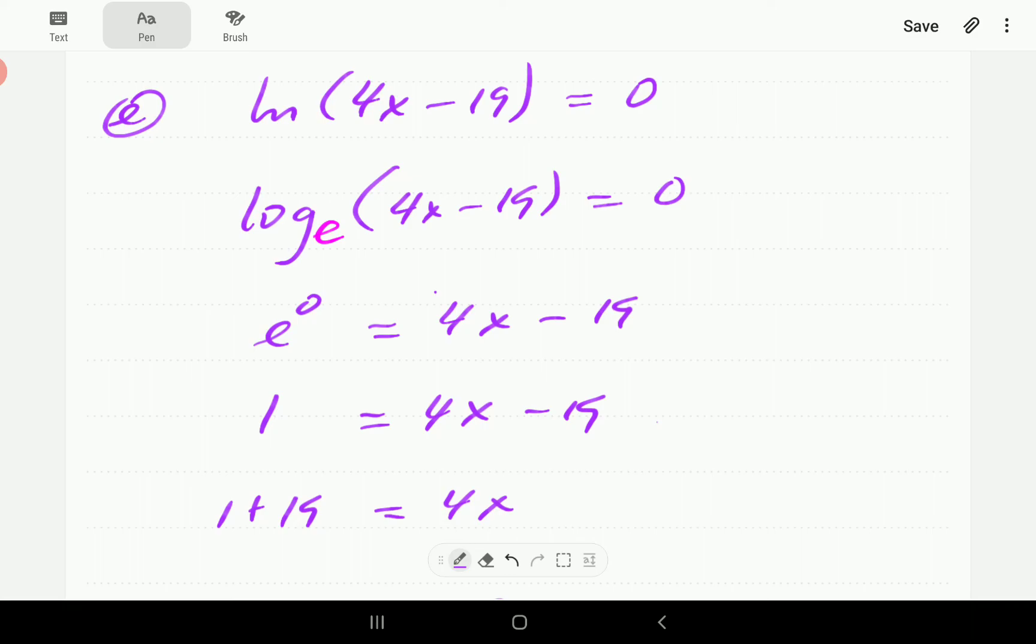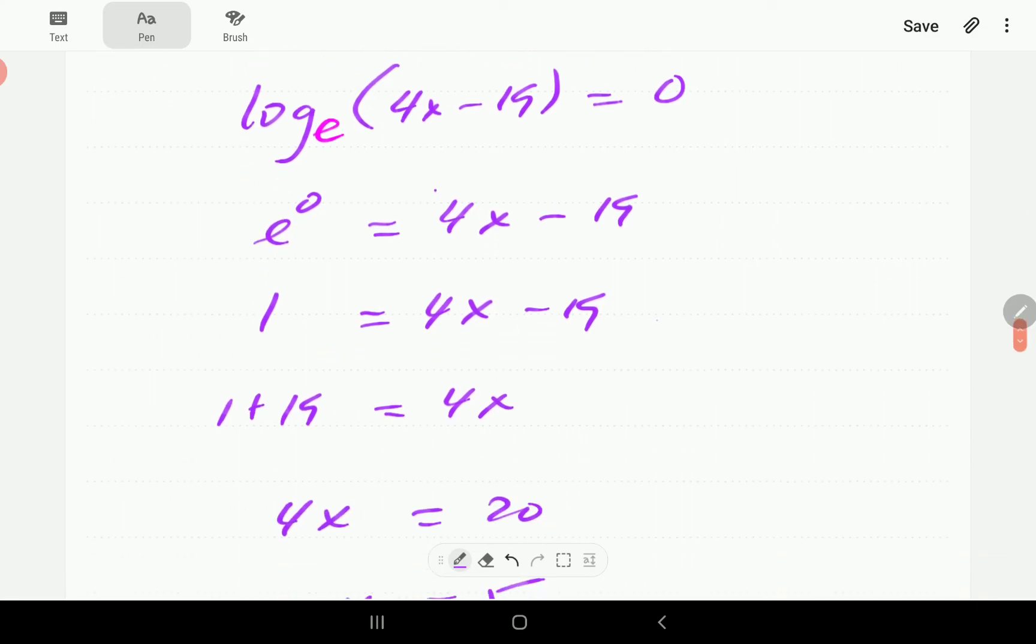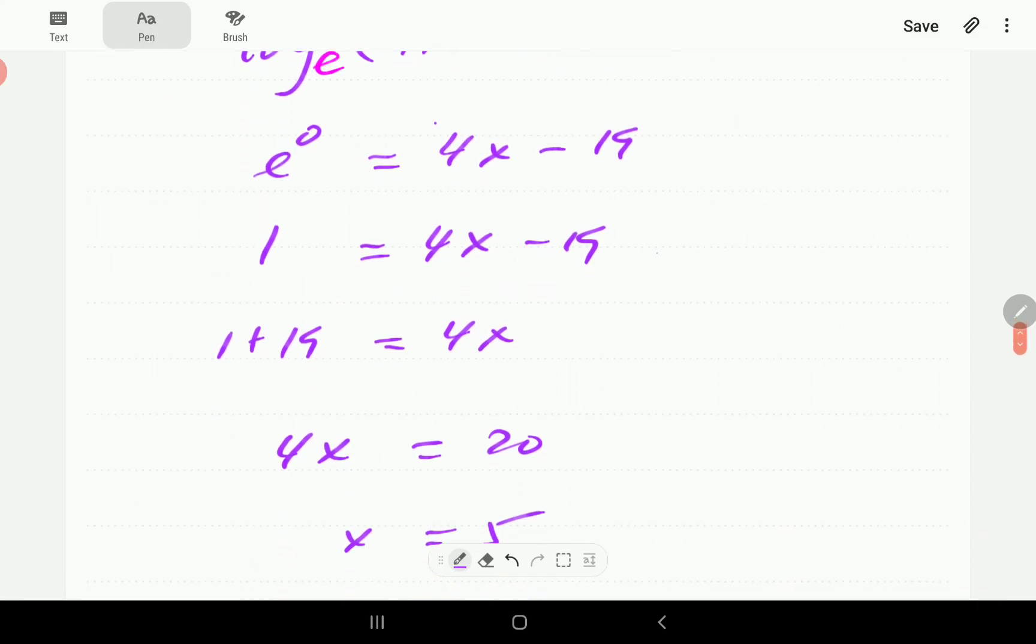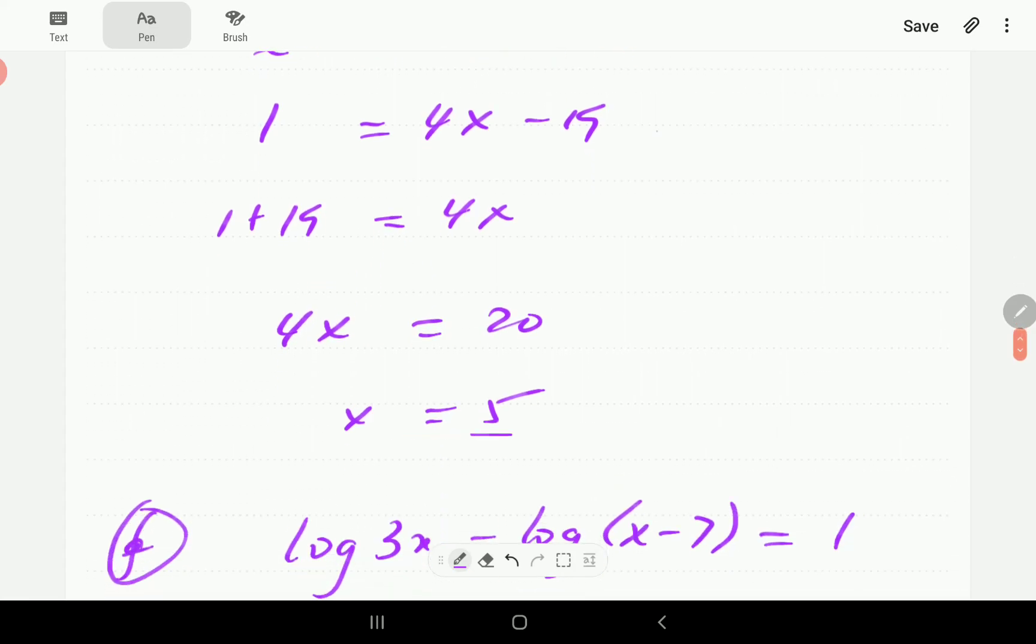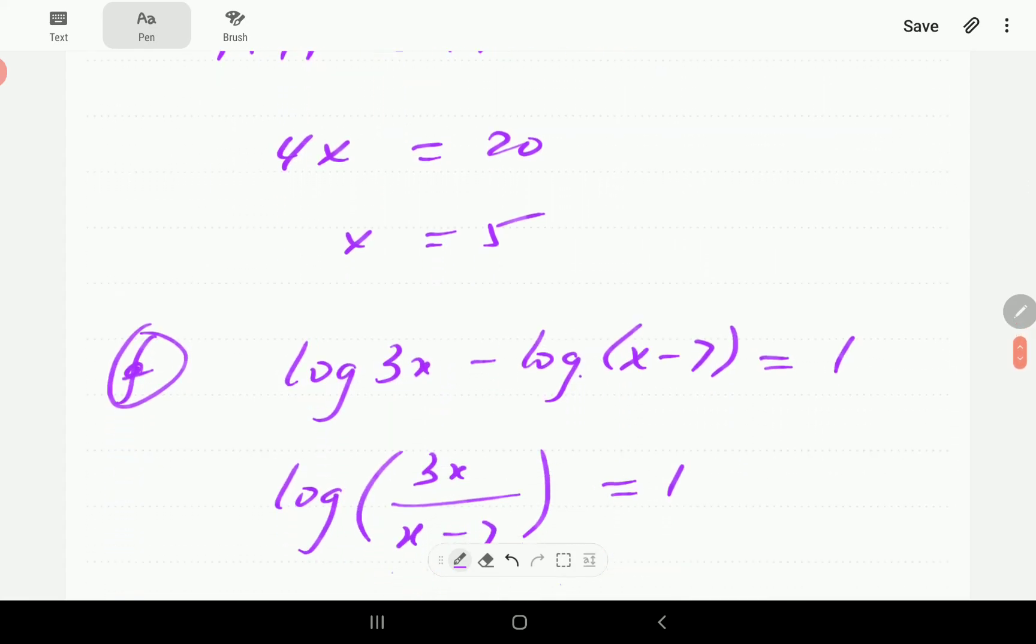All right, so for E we've got ln 4x minus 19. Now ln stands for log base e. So if we write this in exponential form, it's going to be e to the 0 equals 4x minus 19. e to the 0 is 1. So from here, we have got 4x is equal to 20. And so x is going to be equal to 5.